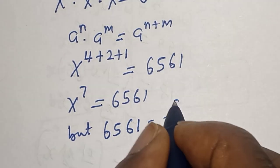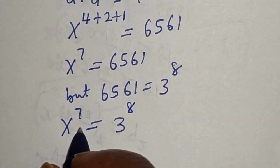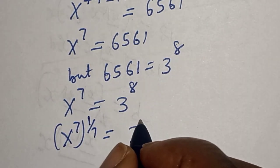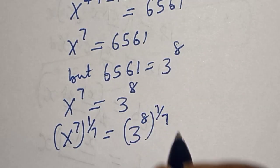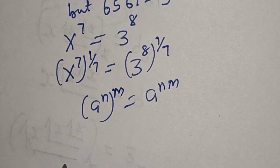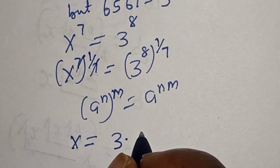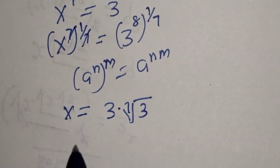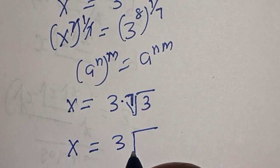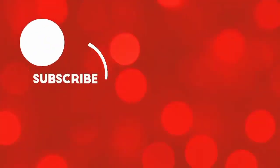But 6561 is equal to 3 to the power of 8. So x to the power of 7 is equal to 3 to the power of 8. Now let's multiply the power of both sides by 1 over 7. x to the power of 7 times 1 over 7 equals 3 to the power of 8 times 1 over 7. This cancels, so x is equal to 3 multiplied by the 7th root of 3. That is our final answer. Before you leave, like, share, comment, and subscribe. Thank you, bye.